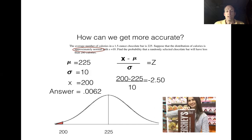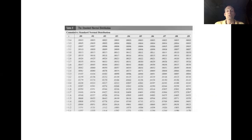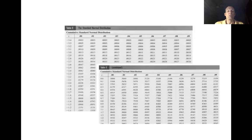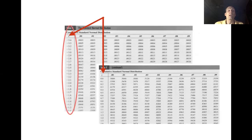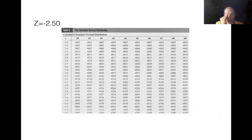A z score of negative 2.5 isn't a probability — it means our x value is exactly 2.5 standard deviations below the mean. That's half the key to figuring out our probability. Now we bring out our z tables — there are two of them. We look at the sign on our z score: it's negative, so we use the negative z chart. We start by looking at the far left column.